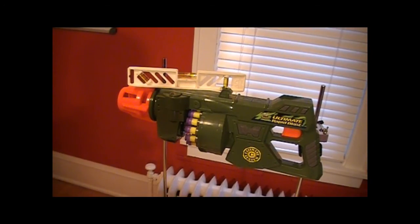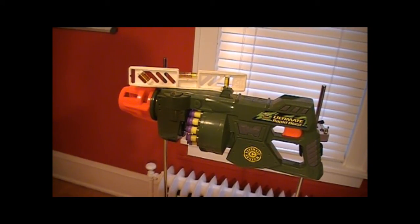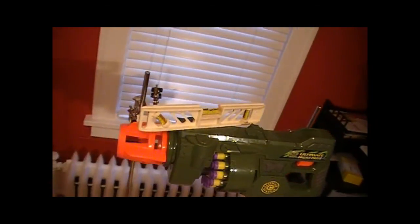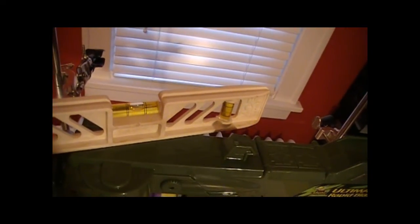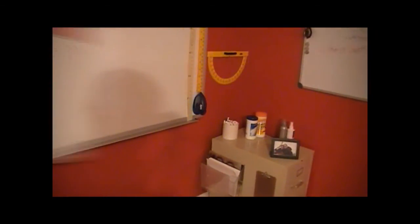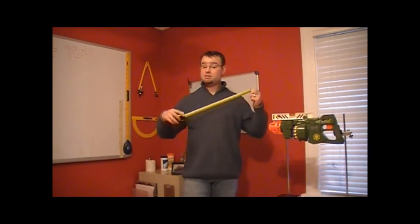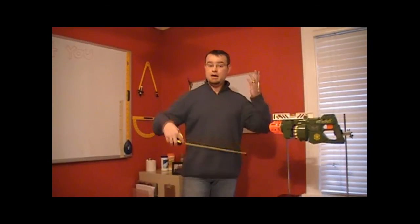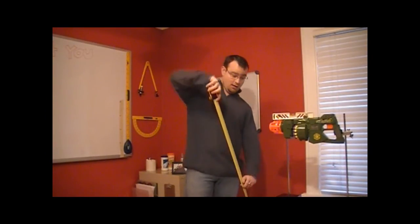First I attach the gun to the ring stands and make sure that we have a level barrel so that it's shooting straight forward. It's going to be shooting at this wall. Now I'm going to take a few measurements. The first measurement we're going to take is how high the gun barrel is off the ground.